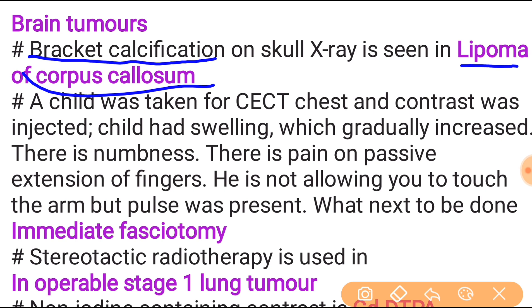A child taken for CECT chest had contrast injected. The child developed swelling that gradually increased, numbness, pain on passive extension of the finger, and would not allow touching the arm — but pulse was present. The next step to be done is immediate fasciotomy.